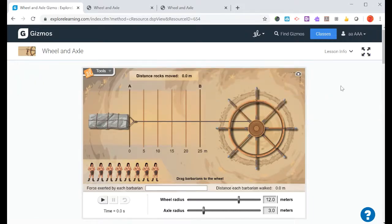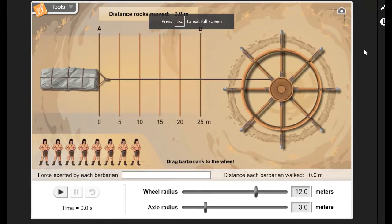All right, let's get started on this gizmo. It's very straightforward. Let's make it a little bit bigger here. All that we're going to do for this gizmo is we're going to see how many of these barbarians do we need to spin this wheel in order to get this heavy load to move a certain distance.